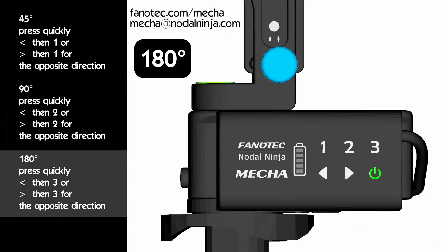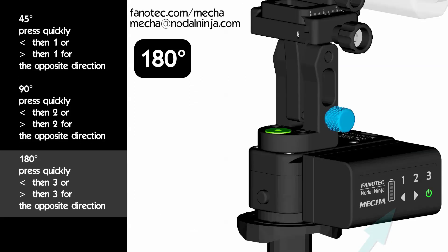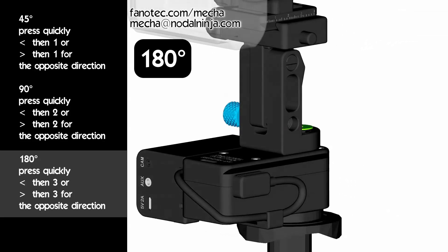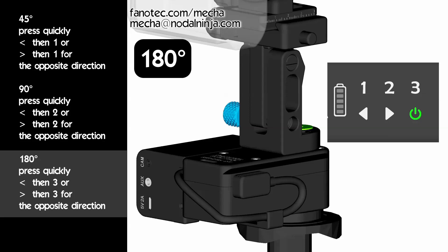For 180 degrees rotations, use the left arrow and 3. Or right arrow and 3. Press the left arrow button, then quickly press 3. Press the right arrow button, then quickly press 3, for the opposite direction.